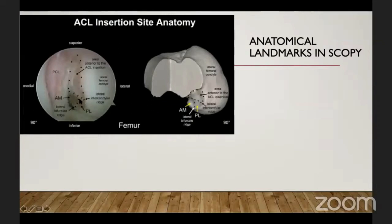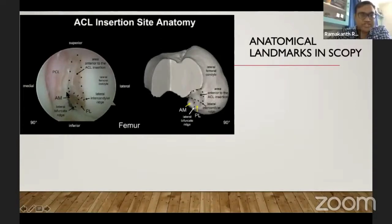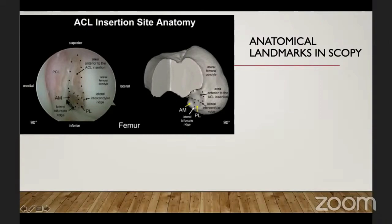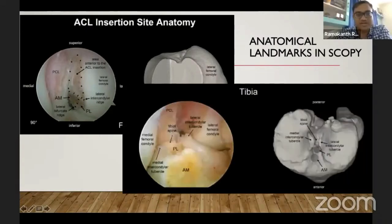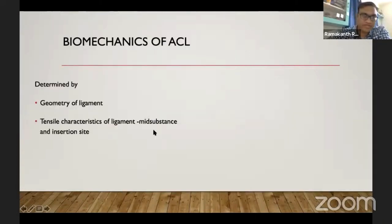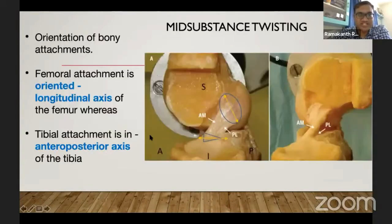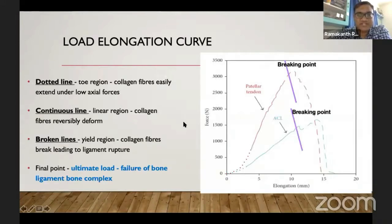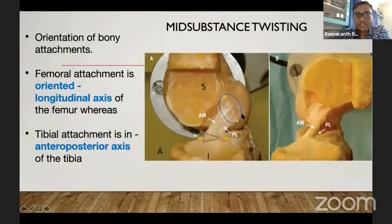The arthroscopic view shows the attachments with the intercondylar ridge and bifurcate ridge separating the different bundles, and the tibial attachment can also be seen arthroscopically. Biomechanics is determined by the geometry of the ligament, including the mid-substance and the insertional site. The orientation of fibers at the femoral attachment is along the long axis of the femur, whereas at the tibial attachment it is along the anteroposterior axis.